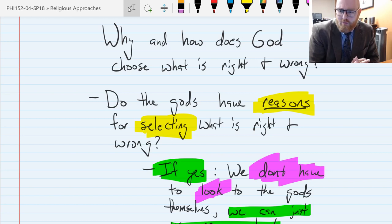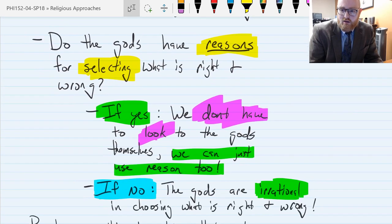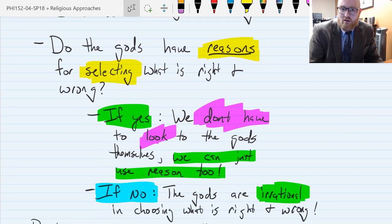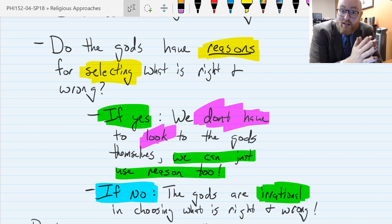And so we have two options. Do the gods have reasons for selecting what is right and what is wrong? If they do, or it does, have reasons for selecting what is right and wrong, then think about that. We don't have to look to the gods themselves. We don't have to rely upon revelation in order to tell us what is right and what's wrong. So we can just use the same reasoning that the gods used, we can use that too.